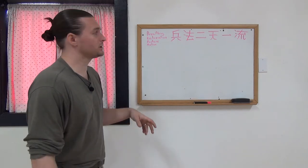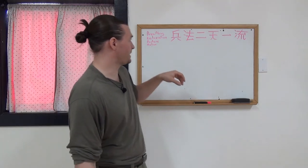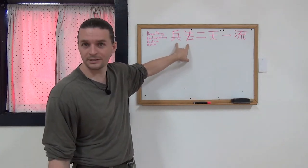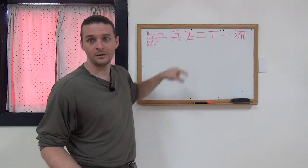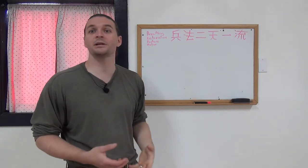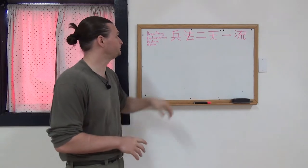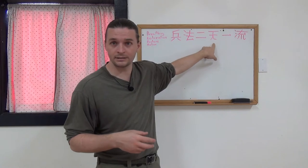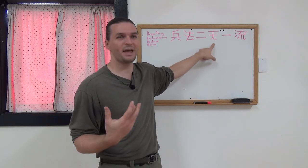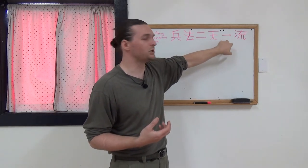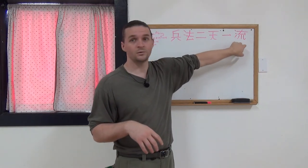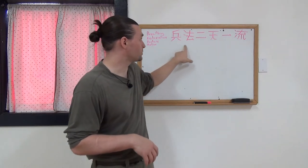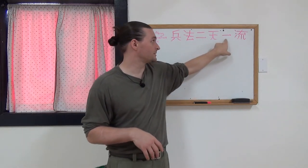So let's look at the direct meaning. Hyoho is the archaic pronunciation of the word heiho, and heiho means military strategy. Ni is just the number two. Ten as the character for heaven. Ichi is one, and ryu is school. So, the strategy of two heavens, one school.